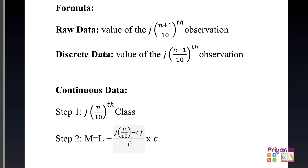J is introduced in quartile, decile, and percentile — not in median. In all positional averages, you still find the lower limit, cumulative frequency, frequency, and class length. Only the divisor number and j change between the different measures.